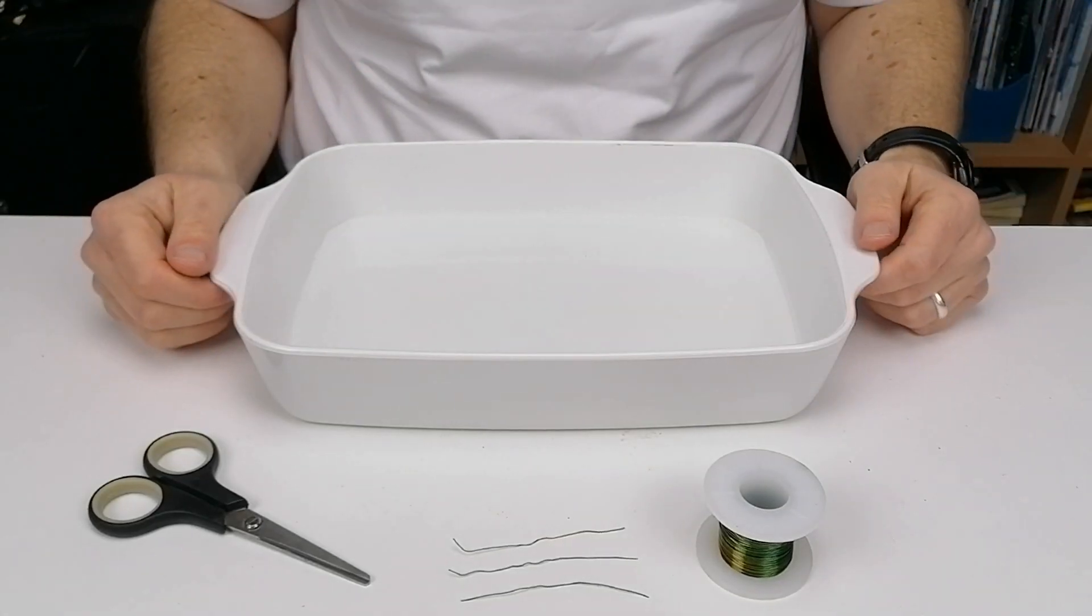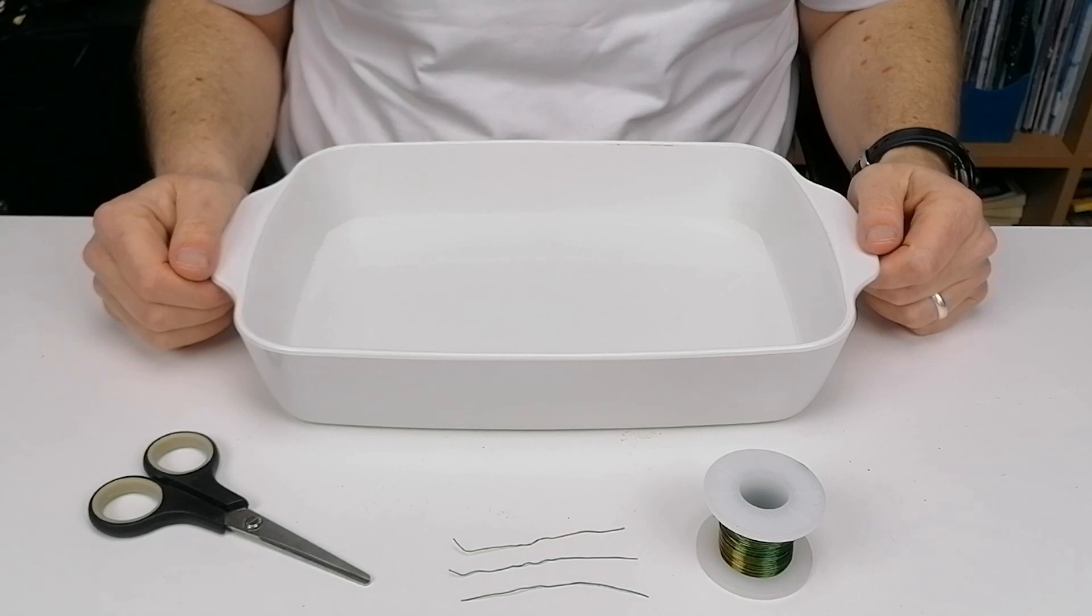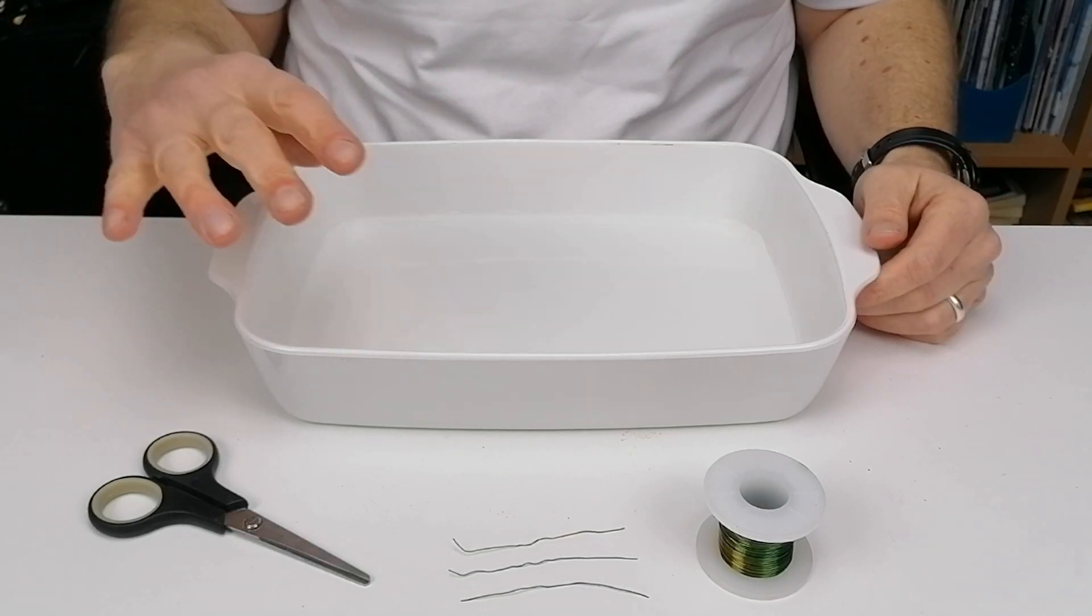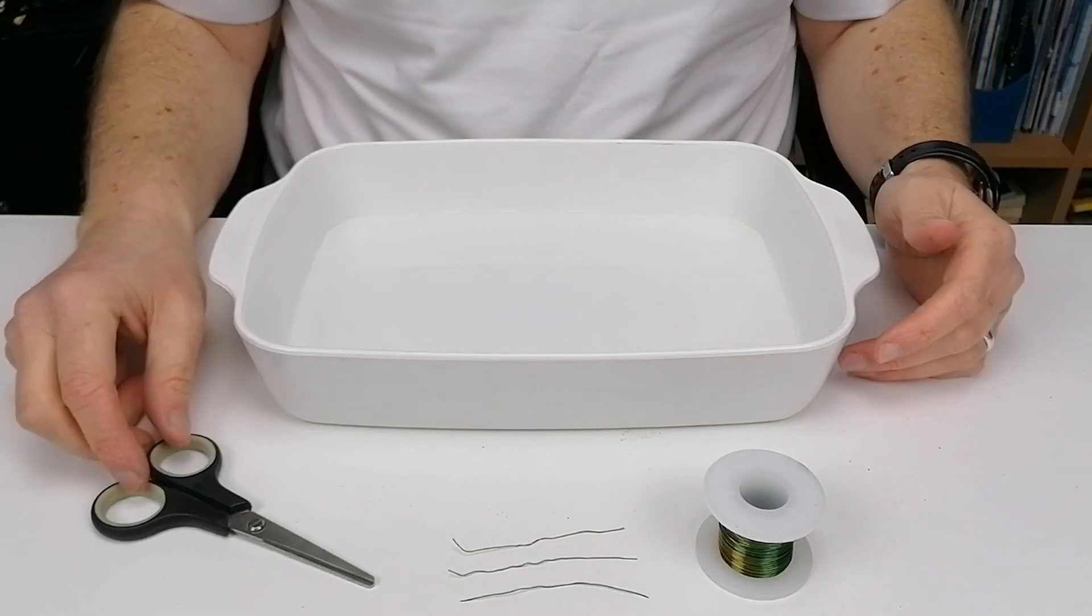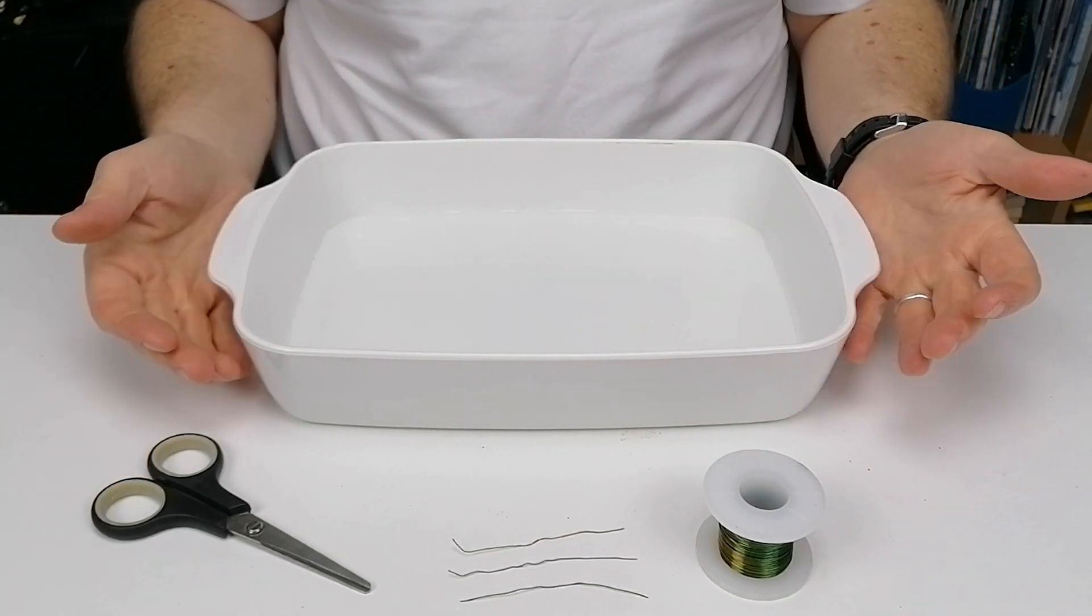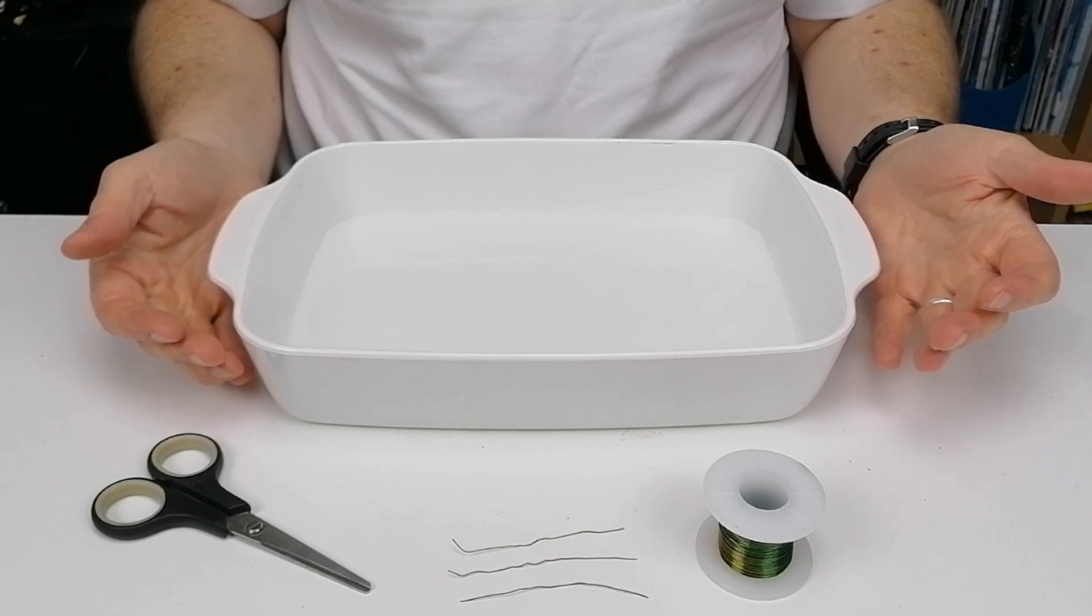What we're going to try and do here in this activity is make a pond skater, an insect that can actually move across the surface of the water. To make this you're going to need a wire, a scissors to cut the wire, and a shallow dish filled with water.